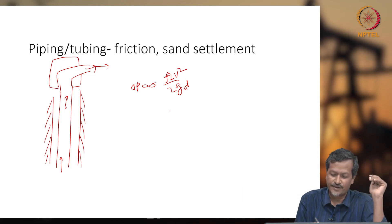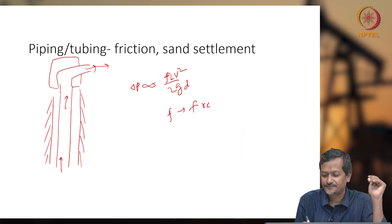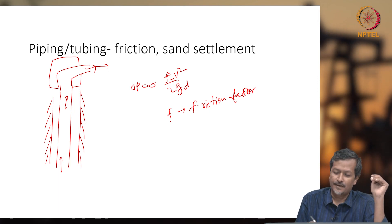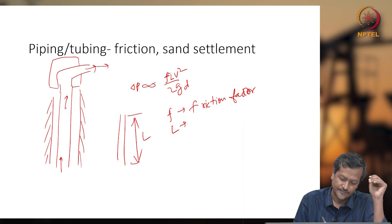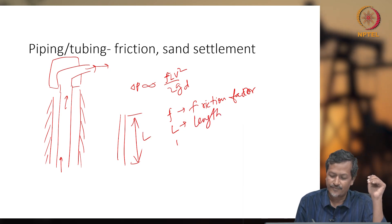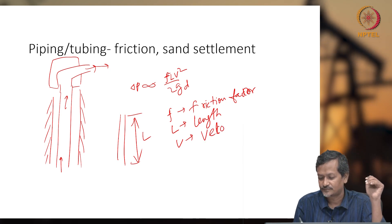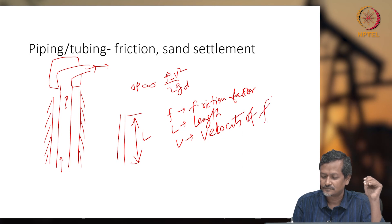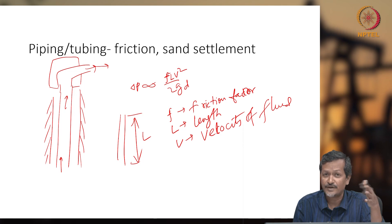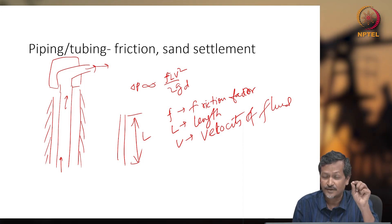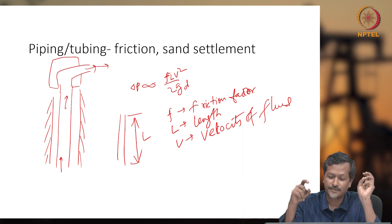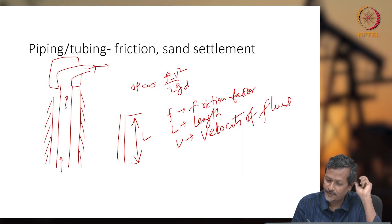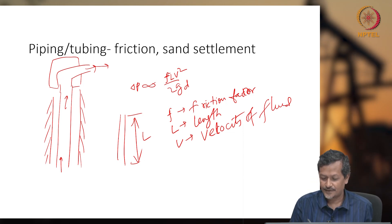In that equation: F is the friction factor, L is the length of the pipe, V is the velocity of the fluid, G is the acceleration due to gravity — 9.81 m/s² in SI units, or 32 lbm·ft/s² in field units — and D is the diameter of the pipe.